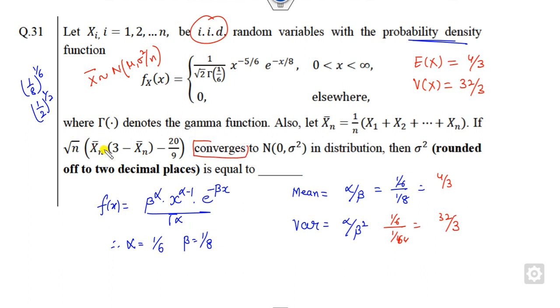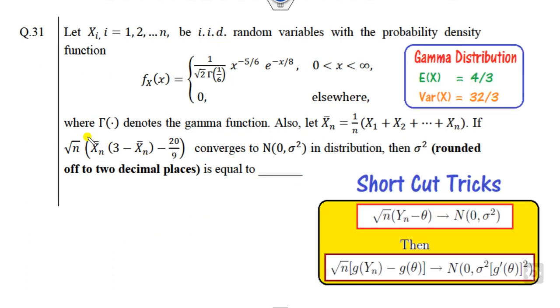I will tell you the shortcut trick: whenever there is a term of root n present in the series, use this shortcut trick. We have the gamma distribution, so whenever there is a term of root n, find yn. We all know this follows the normal distribution with mean and variance.